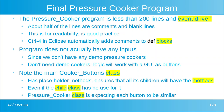Notice that it has placeholder methods. This ensures that all the children will have those methods, so that any pressure cooker can access the methods even if they don't do anything. This makes every object the same.